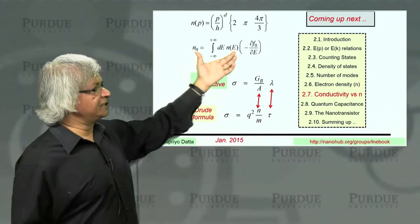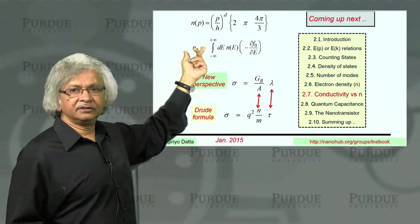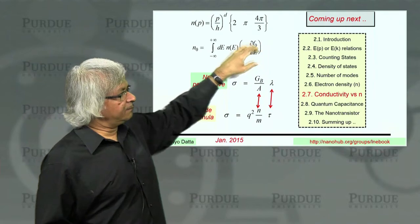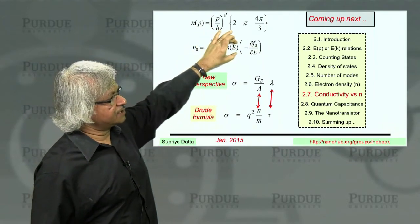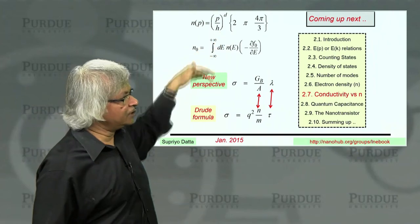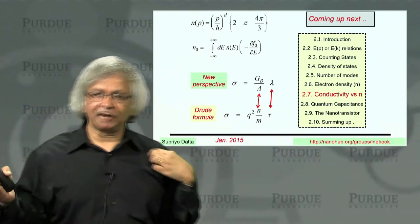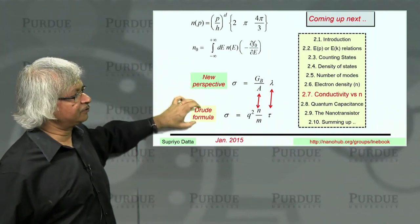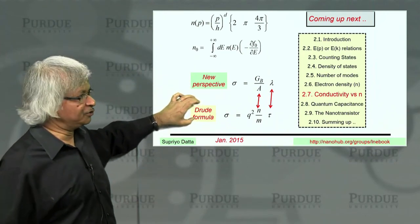Which you can average over energy to get this measurable electron density. So that brings us, kind of introduces this electron density into our discussion.